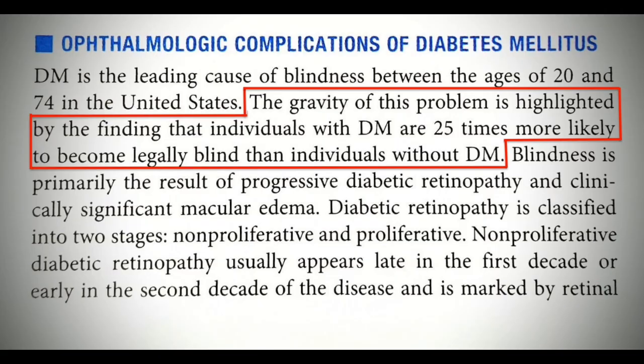Diabetic retinopathy is the most common complication of diabetes mellitus and is the leading cause of blindness in ages 20 to 64 in the United States. It affects about 3.4% of the population, which comes out to be 4.1 million individuals, and about one-fourth of them have vision-threatening disease. Diabetic patients are 25 times more likely to develop blindness than someone without diabetes.